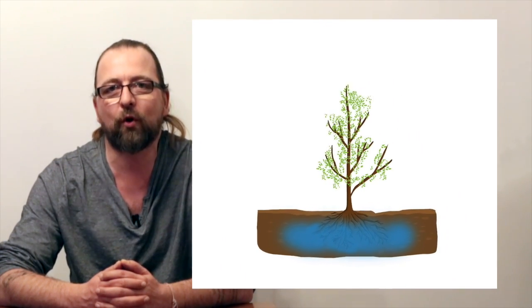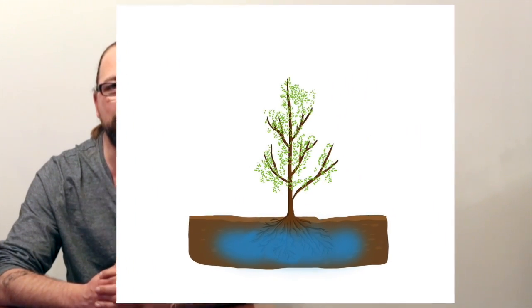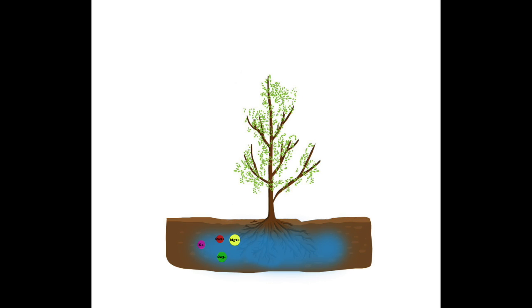Alors l'eau est un élément indispensable à la vie de nos végétaux, et donc dans le potager c'est vraiment quelque chose d'important. Cette eau va en fait servir de transporteur pour tout un tas d'éléments minéraux qu'elle va dissoudre dans le sol. Cette eau va donc devenir ce qu'on appelle la solution du sol.